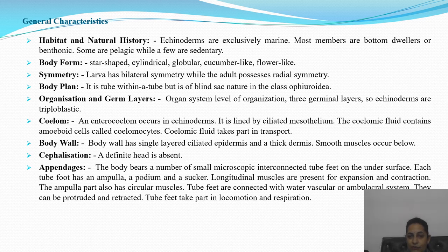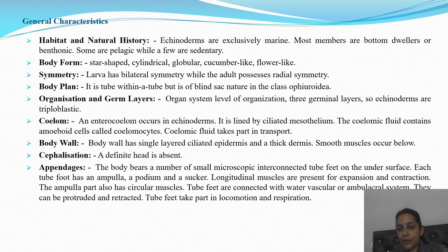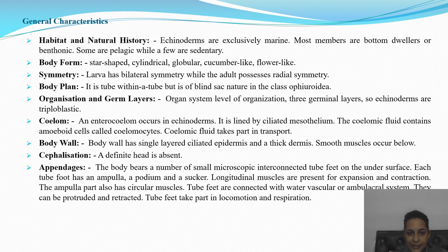Organization and germ layers: organ system level of organization, with three germinal layers — ectoderm, mesoderm, and endoderm. Coelomic fluid contains amoeboid cells called coelomocytes. Coelomic fluid takes part in transport. Body wall is single-layered ciliated epidermis with thick dermis; smooth muscles occur below.